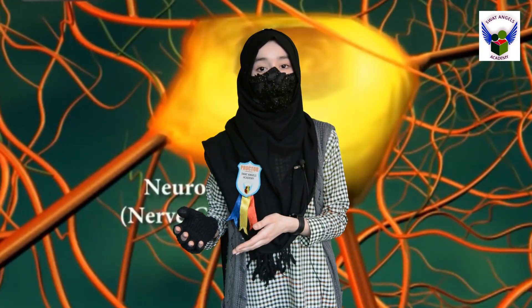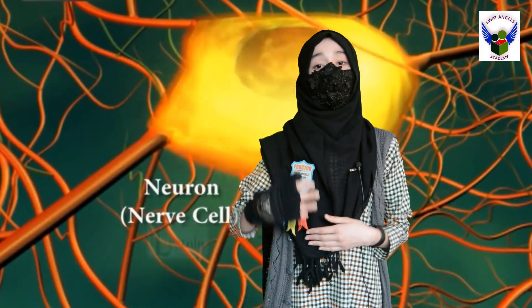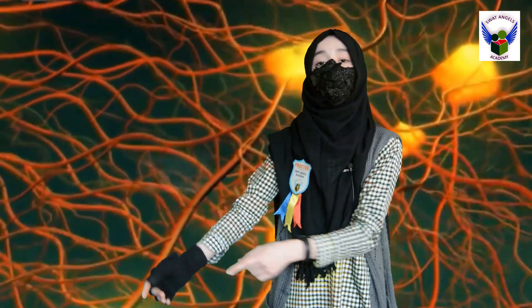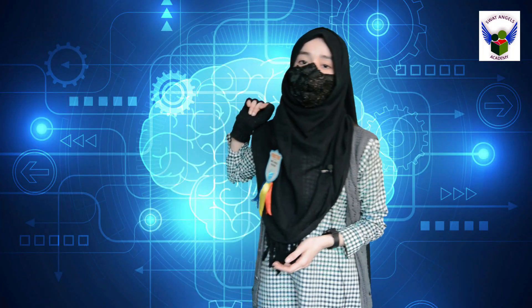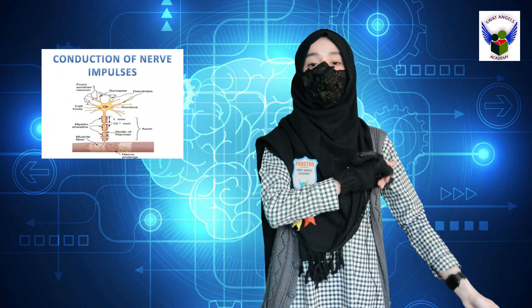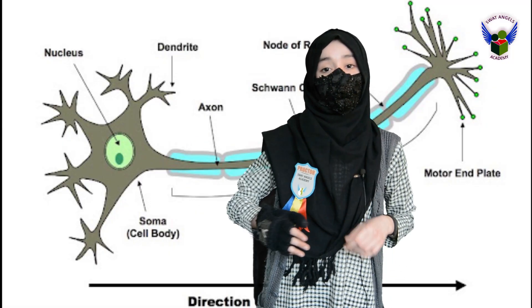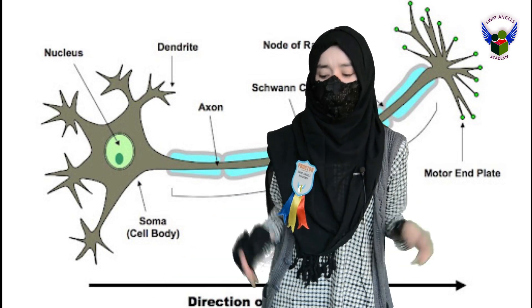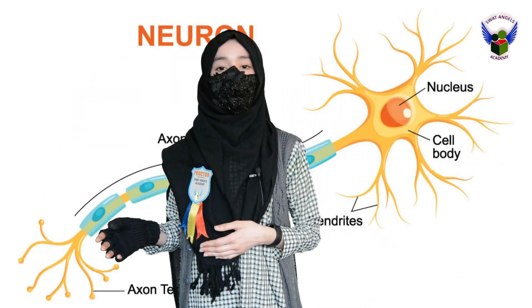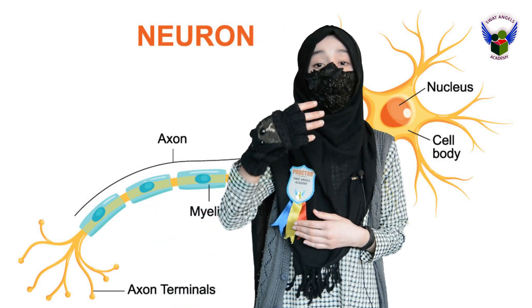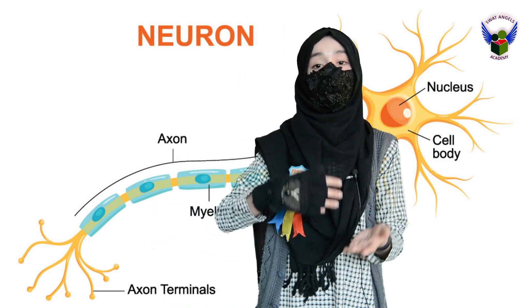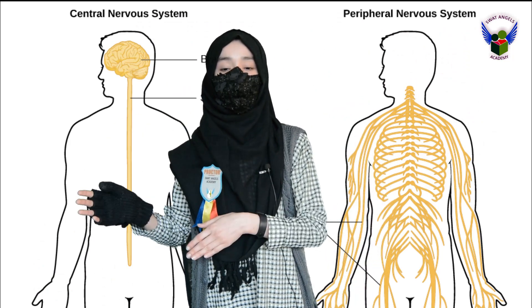Neurons are so called nerve cells. Nerve cells are those kinds of cells which have the ability to conduct messages in the form of nerve impulses. For example, if I touch a hot pan, I will suddenly snatch my hand — this is because the nerve cells conduct a message in the form of nerve impulses. Nerve impulses are a way of electrochemical change that travel through the Neuron.